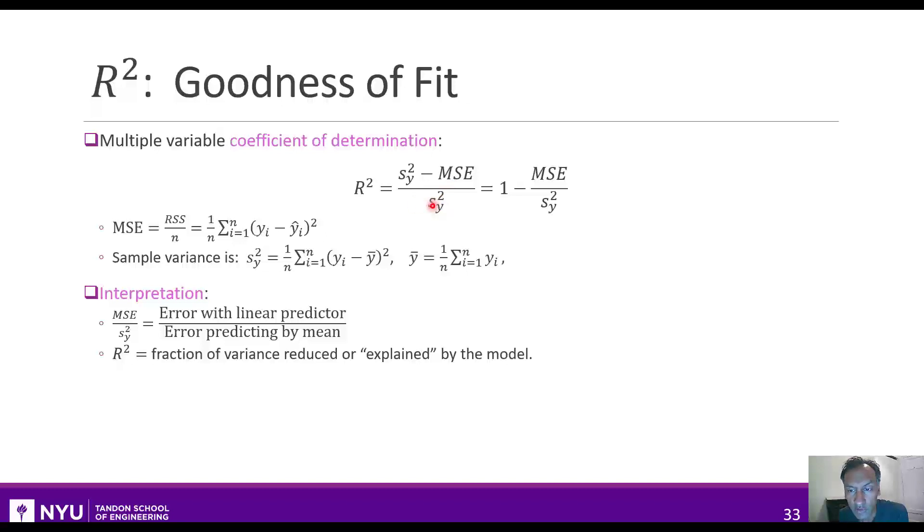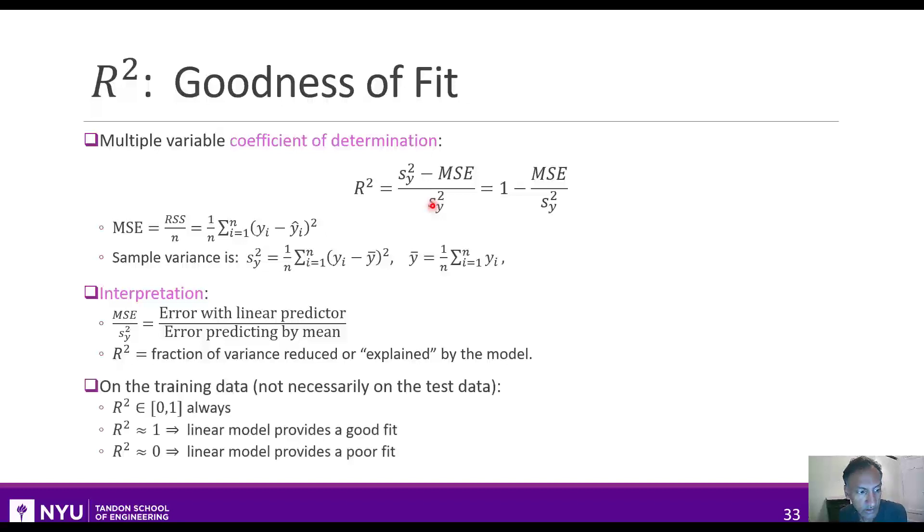So sometimes you'll see, for example, if the r squared value would say 0.6, you will say 60% of the variance of the data can be explained by the predictors.